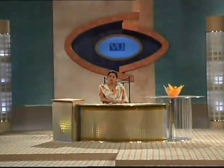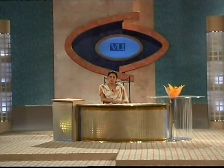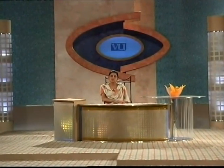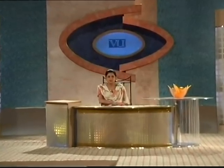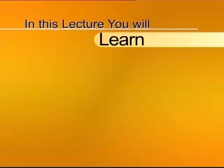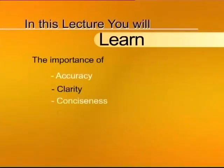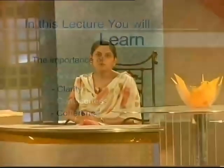Lecture 7. As-salamu alaykum. Welcome to the Virtual University's course on Business and Technical Communication. In the previous lesson, we looked at defining objectives and appropriateness in business and technical communication. Today, we will talk about accuracy, clarity, conciseness and coherence when writing for technical communication. In this lecture, we will talk about the characteristics of effective technical communication and also learn to recognize and cultivate the qualities of effective technical communication.